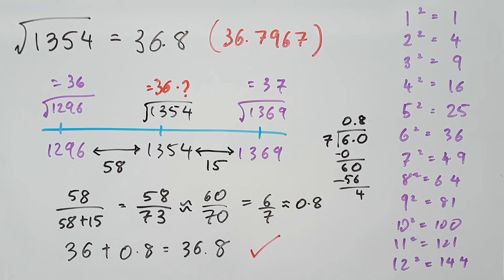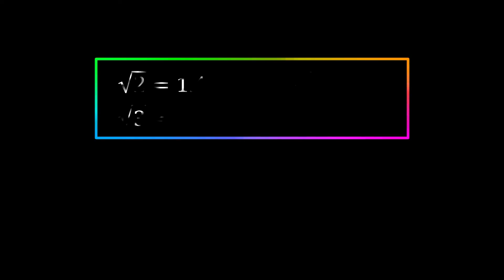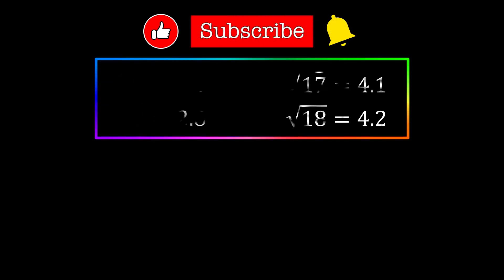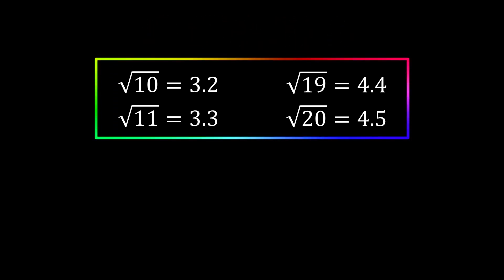So as long as you know how to use your perfect squares on a number line, along with some fractions and long division, you'll be able to estimate any square root number. And with enough practice, you'll be able to do it mentally. So I hope you guys learned something from this video. Let me know what you think down in the comments below. Hit the like button if you enjoyed it, and subscribe to the channel to learn more stuff coming in the future. Thanks for watching guys, have a good one, and I'll see you next time. Bye!